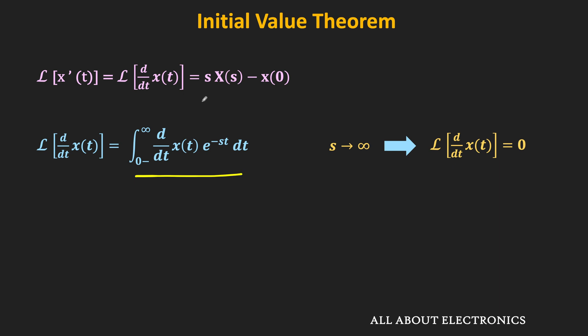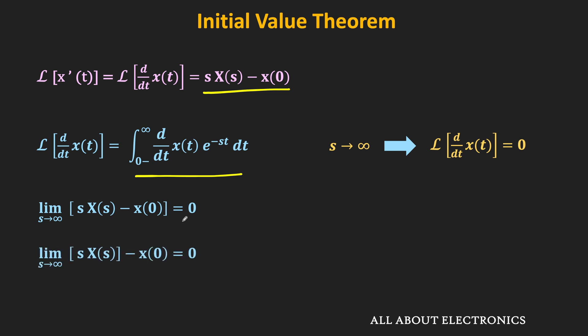We also know that the Laplace transform of dx/dt can be given by the expression s·X(s) − x(0). So as the limit s→∞, this expression also becomes 0. Now, x(0) is independent of the variable s, so the limit applies only to the first term. We can write: limit s→∞ of s·X(s) − x(0) = 0, or equivalently, x(0) = limit s→∞ of s·X(s). And that is the initial value theorem of the Laplace transform.